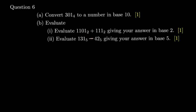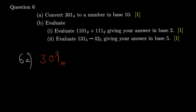Number six: convert 30301 base 4 to a number in base 10. When converting numbers the procedure is more or less the same. What we encourage you to do is to quickly label your digits starting from the unit digit, labeling it starting with zero, then one, then two, ascending like that.